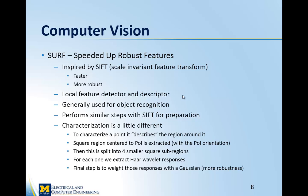To characterize a point in SURF, it describes the region around the point of interest rather than just extracting the feature. For each point of interest, we get a square region centered on that point, which is then split into four smaller square sub-regions. For each sub-region, we extract the Haar wavelet response, characterizing the region rather than the point. The final step is to weight those responses with a Gaussian method, making it more robust — better than SIFT, which basically just extracts the feature and its orientation direction.